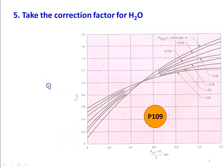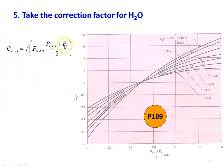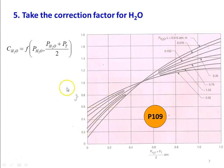The correction factor for H₂O (C_H₂O) is a function of PH₂O and (PH₂O + Pt) / 2. This graph is on page 109 of the data book. The x-axis is (PH₂O + Pt) / 2 in atmospheric pressure, and the lines are for different values of PH₂O × L in atm·m. All pressures are in terms of atmospheric pressure. Take the correction factor from the graph on page 109.